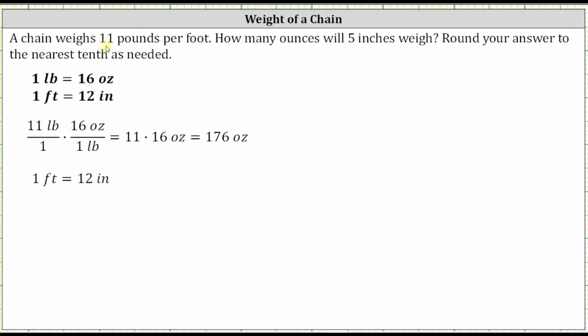To convert 11 pounds to ounces, we multiply by 16 or using unit fractions, we multiply 11 pounds as a fraction with the denominator of one by 16 ounces over one pound. Notice how we have pounds in the numerator and denominator. When multiplying, pounds simplify out, leaving us with 11 times 16 ounces, which is equal to 176 ounces.